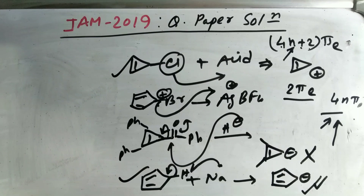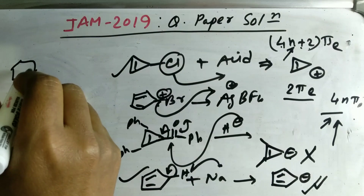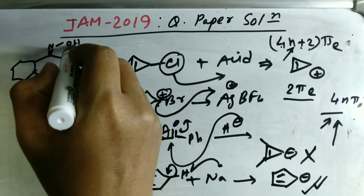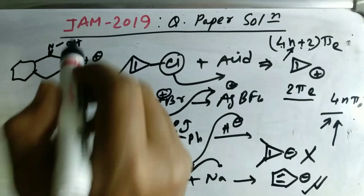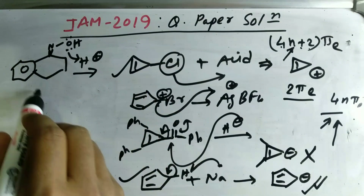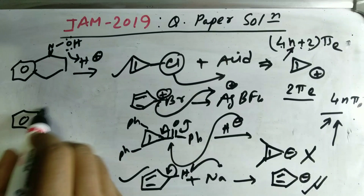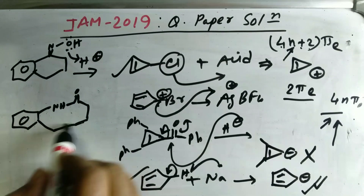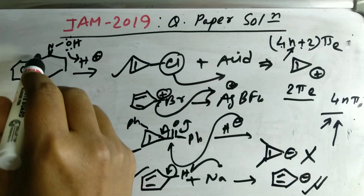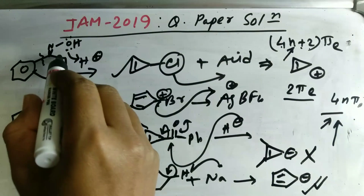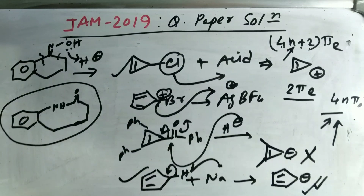Another question involves a Beckmann rearrangement. There is an oxime-type system with an N-OH group. The more electron-rich group migrates in Beckmann rearrangement — that is why the shifting occurs in the particular direction shown, and not the other way. This gives the final product. I am not showing the full mechanism since you already know Beckmann rearrangement.